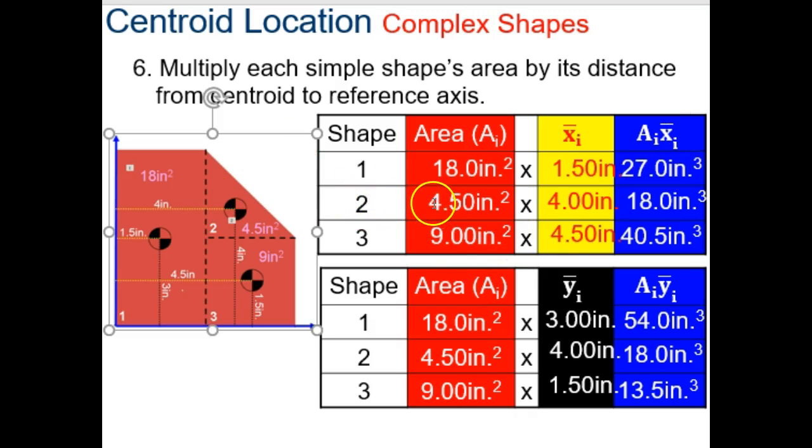So, we do the same thing for shape 2, 4.5 times 4 square inches, or sorry, 4.5 square inches times 4 is our X coordinate, which is 18 cubic inches, 9 times 4.5, 40.5. So, in this chart right here, all we're doing is we're finding the area times the centroid location for each of the three shapes in the X dimension, and then we're doing the same thing again in the Y dimension. So, you might want to pause it here, take a look at this, make sure you see how these numbers calculate out. Take some time to think about this chart. These charts are not given to you on the equation sheet, but they do make the process a lot easier to manage.